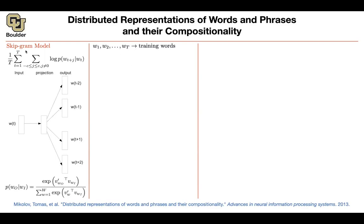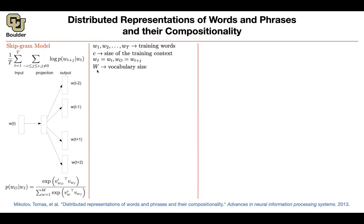There is a difference between your corpus — the entire corpus — and your vocabulary. The size of the corpus is T, and C is the size of your context window, which is a hyperparameter. The size you choose for your vectors is another hyperparameter. What words you want to include in your vocabulary is another hyperparameter you can choose. The parameters are these V and V-primes. W_I is W_t (input word) and W_O is any of the output words. The size of your vocabulary is usually much smaller than the size of your corpus.